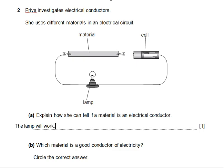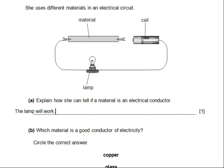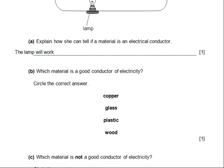That is how the person can know that a material is an electrical conductor. Question B: which material is a good conductor of electricity? Circle the correct answer. We have four materials: copper, glass, plastic, wood. Which one transfers electricity? We know copper is the material that transfers electricity. The other ones — glass, plastic, wood — do not conduct electricity. You have to circle the answer. Even in the checkpoint exams, when it says circle, you have to circle.